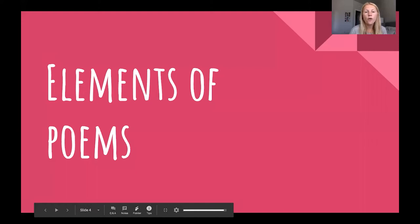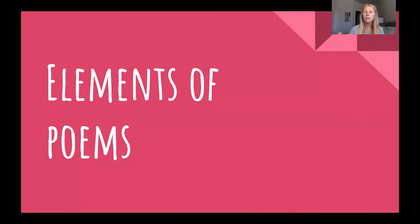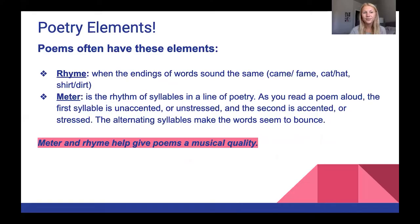Now we are going to go over the elements of poems. There are many different elements that come together to create a poem. Starting with rhyme: rhyme is when the endings of words sound the same. Examples of rhyming words are came and fame, cat and hat, shirt and dirt.